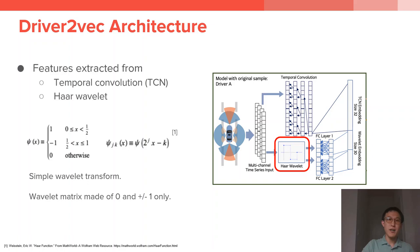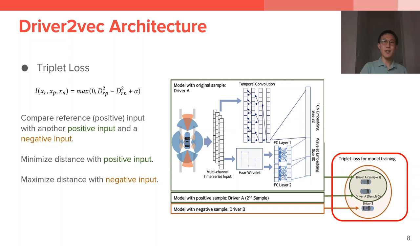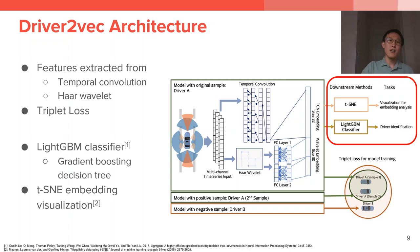Instead of a typical cross-entropy loss for the neural network, we use triplet loss. This loss function encourages embeddings from the same driver to be closer together while maximizing distance between embeddings from different drivers. Triplet loss was frequently used for facial recognition, and the analogy works for driver identification as well. Finally, there are two downstream tasks that we evaluated. The most important is driver identification, which we performed using XGBoost — an implementation of gradient boosting decision tree. We also used t-SNE to visualize our driver embeddings to show that the embeddings indeed have distinguishing power.